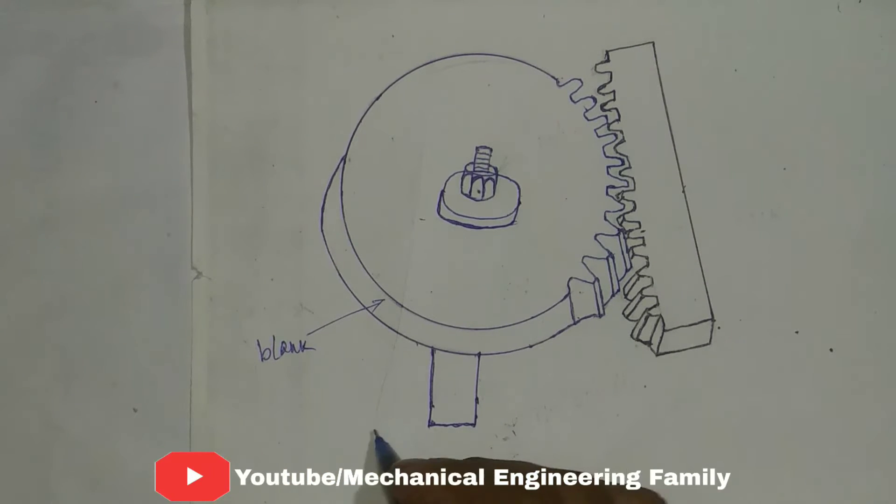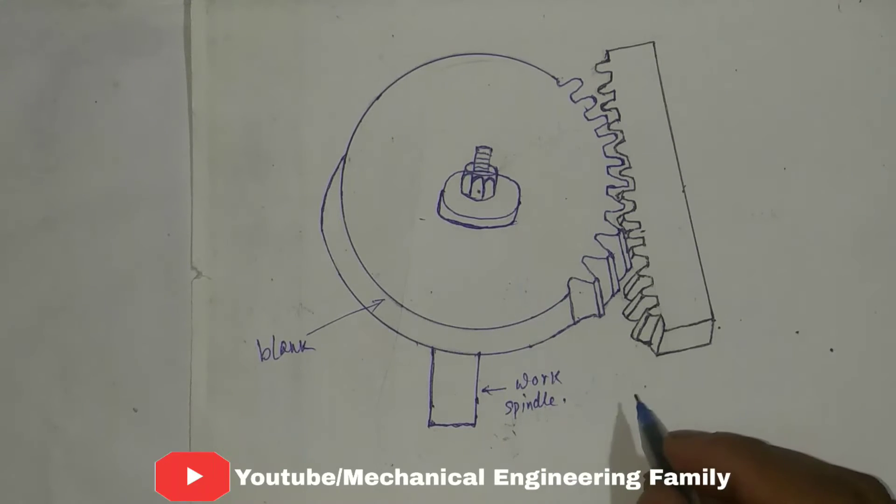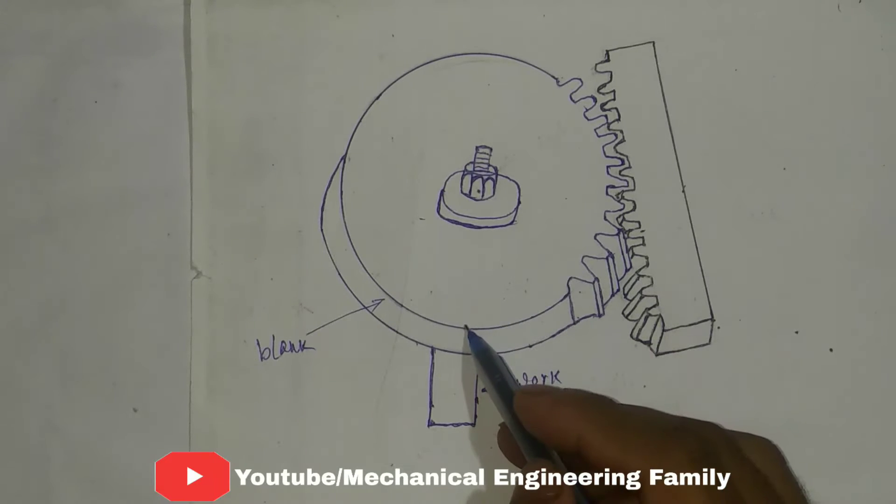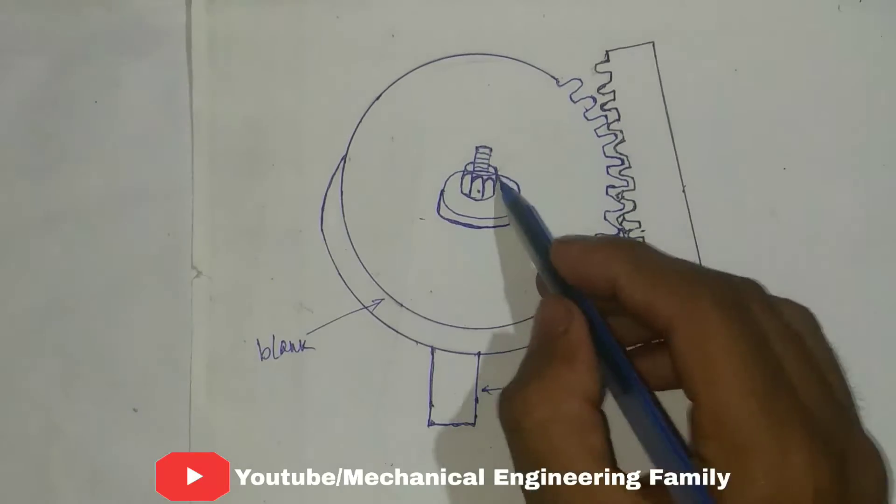This is the work spindle. This blank is fitted on the work spindle by fixing this nut.